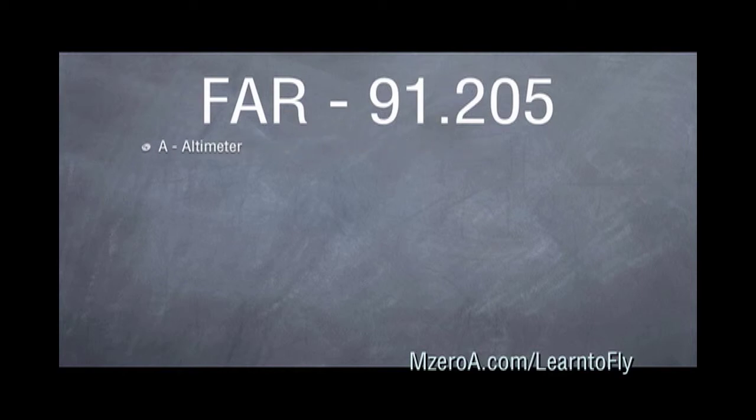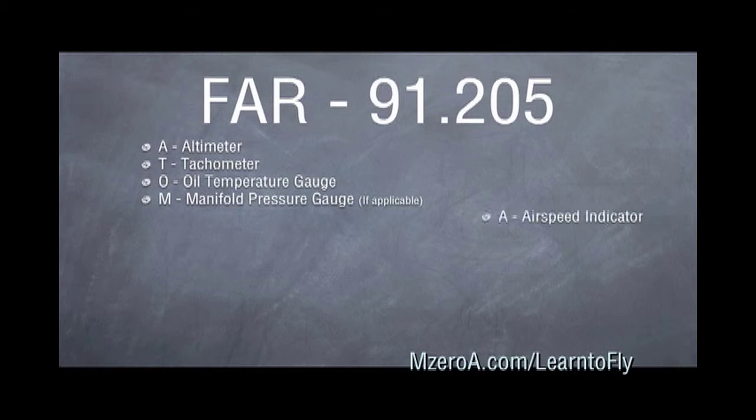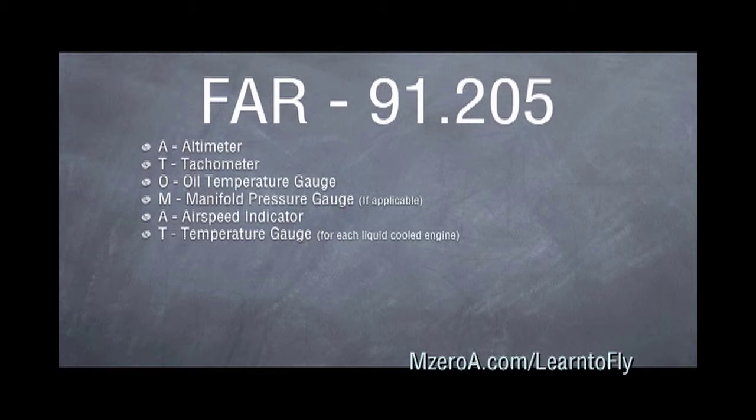The A in our acronym stands for altimeter. T is for tachometer. O is for oil temperature gauge. M is for our manifold pressure gauge. Now this is if it applies. A is airspeed indicator. T is a temperature gauge for each liquid cooled engine. O is an oil pressure gauge.